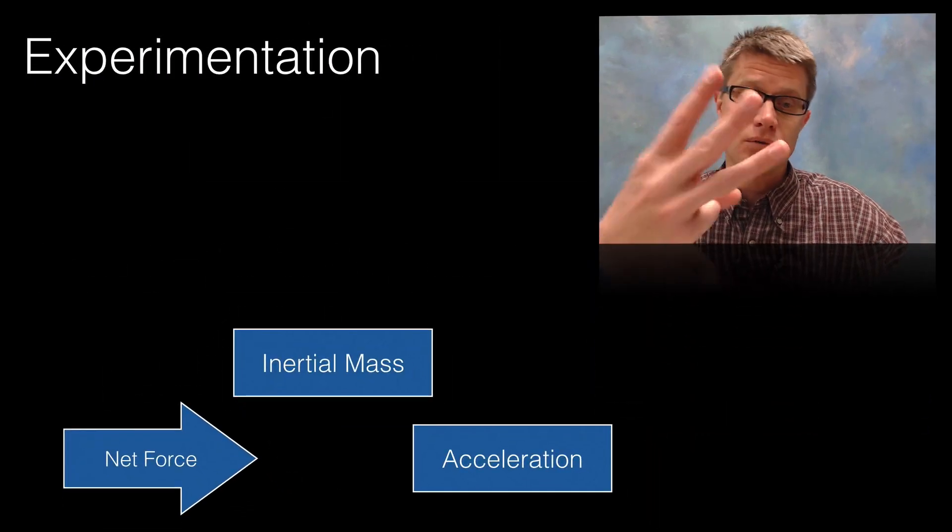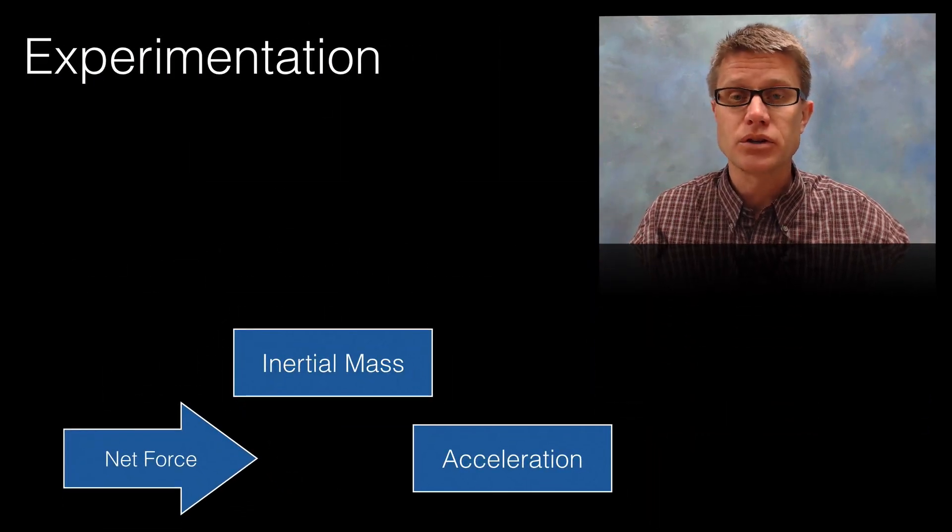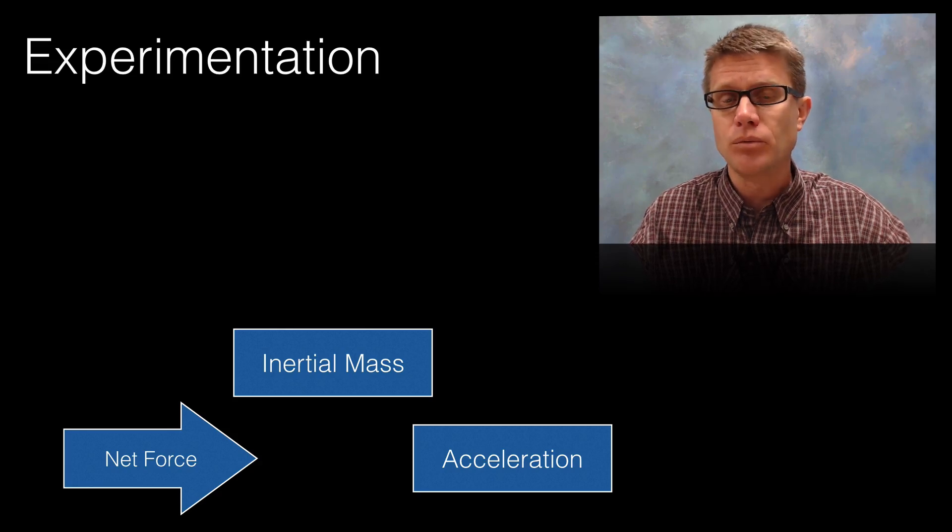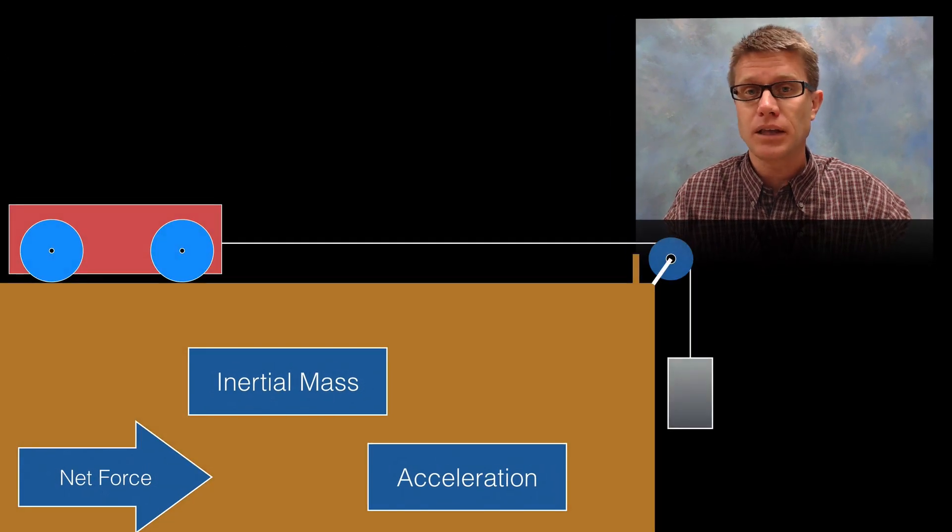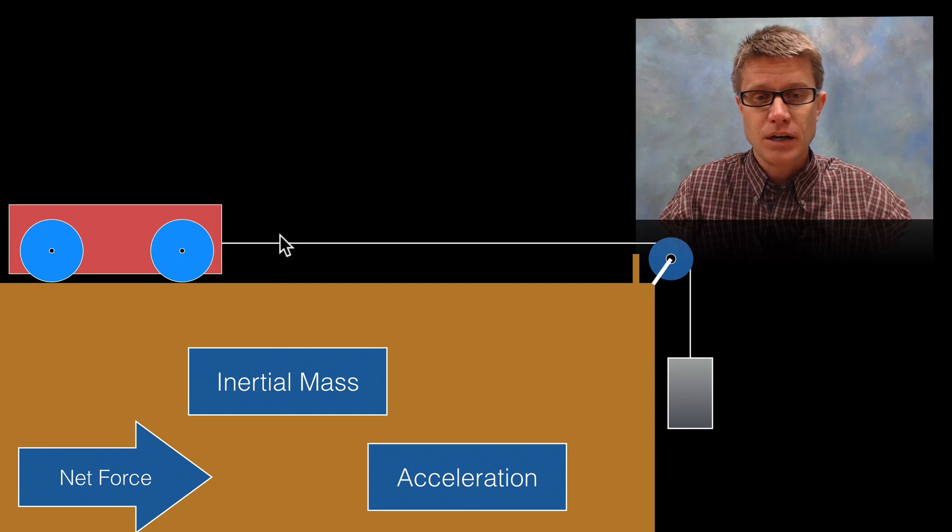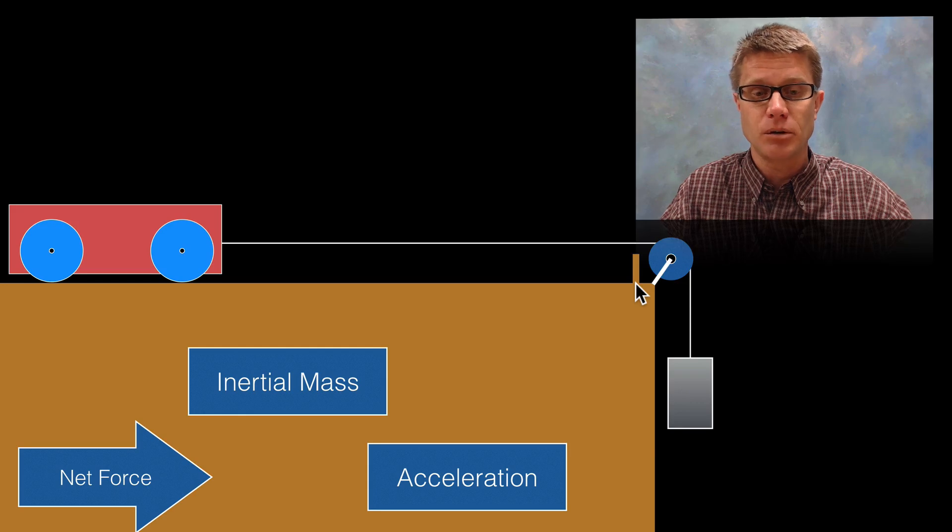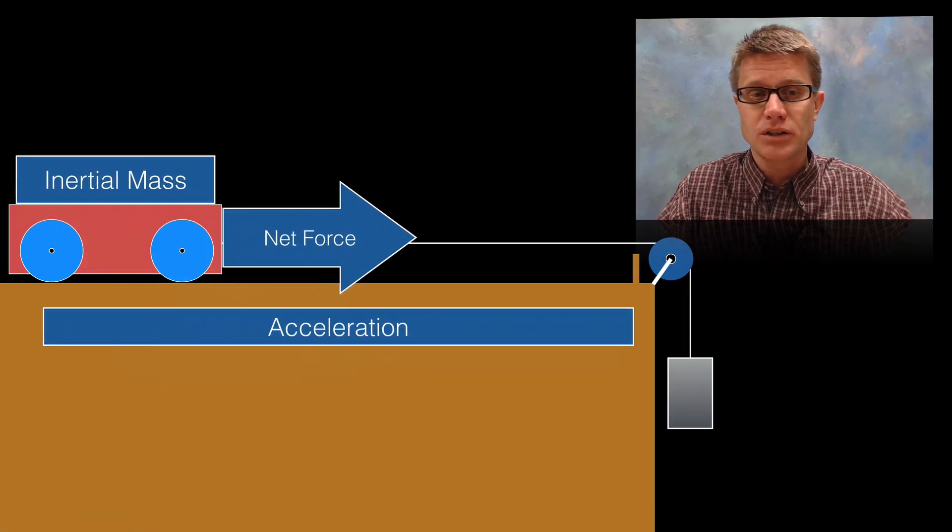So let's look at those three things: net force, inertial mass, and acceleration. How would you study that in a physics lab? We could use a modified Atwood machine like this. We've got a cart attached to a string and then this goes over a pulley, and we have a stop at the end so that it doesn't keep flying off the table.